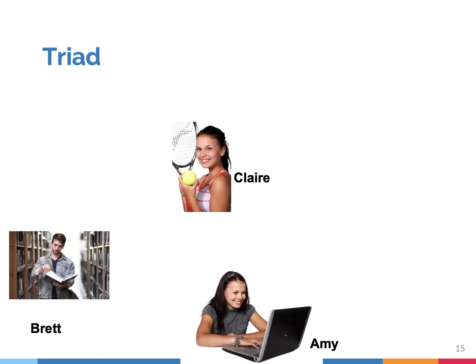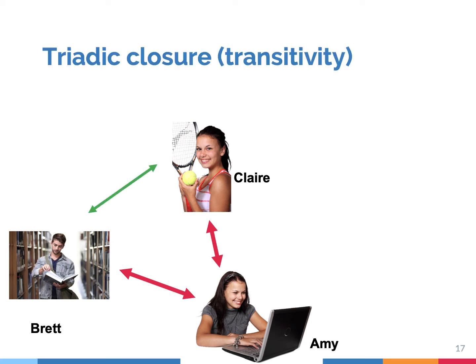Now let's see what this means when you look at a triad. A triad is a network of three persons and the possible ties between them. Amy is befriended with Brad and Claire, and this means there is a 75% chance that Brad and Claire know each other. And when they indeed know each other, we speak of transitivity — we say that the triad is closed, meaning all three are connected to each other.